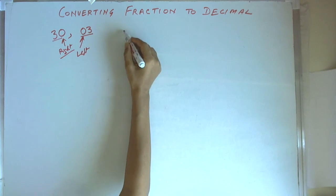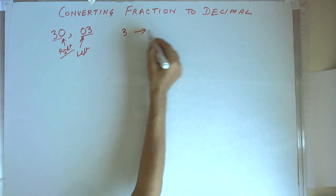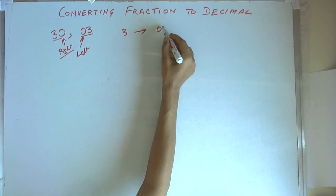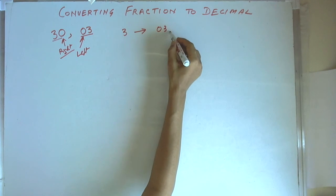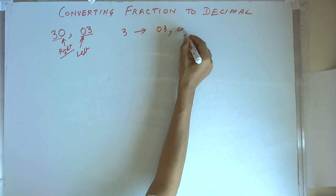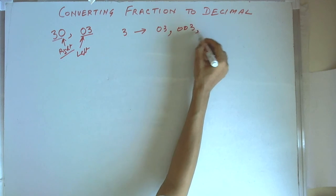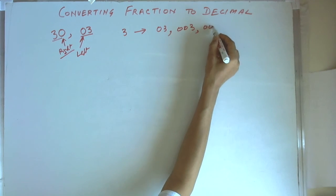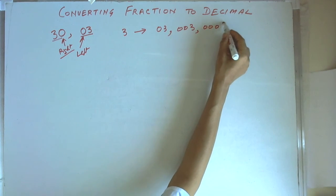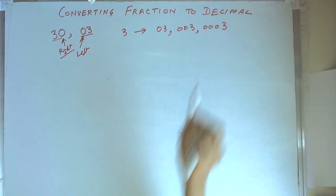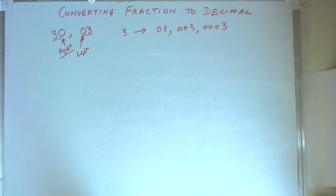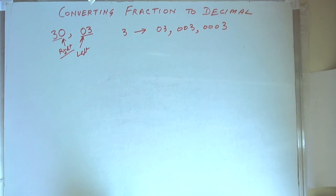That we have number 3 and we can write 03. We can also write 003. We can also write 0003. Any number of 0s on the left hand side will not make any difference in the value.